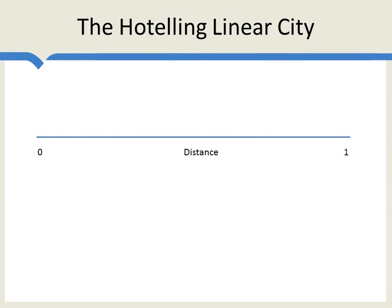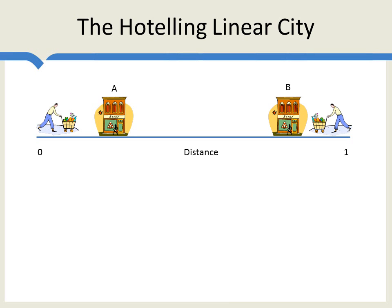We begin with Harold Hotelling's 1929 linear city model. Hotelling said, let's think about Main Street, USA. Here's one end of Main Street — let's call this zero — and here's the other end, one. Let's imagine that firms selling similar products locate at A and B along Main Street. The firms are selling similar products, so customers are going to shop at the firm which is closest to them. Customers located to the left of firm A will shop at A, customers to the right of firm B will shop at B, and they'll split the customers in the middle.